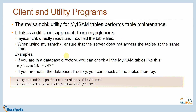Now let's look at client utility programs. The myisamcheck utility for MyISAM tables performs table maintenance and can do more than the SQL statements we just discussed — it has more options. There are two utility programs: mysqlcheck and myisamcheck. myisamcheck directly reads and modifies the table files, meaning you have to go into the directory and work at the command prompt — it directly updates the physical files on the system.